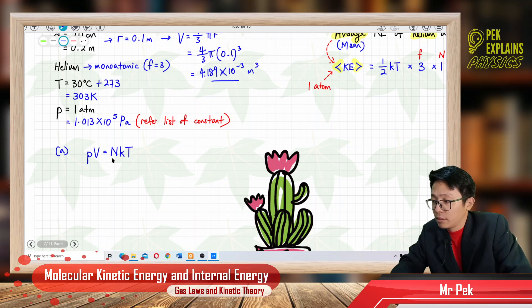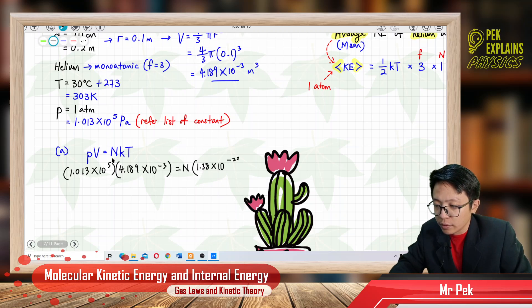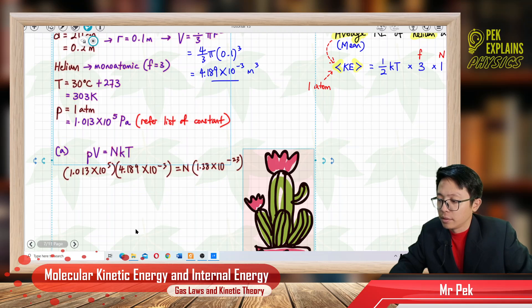Let's substitute all the information. Pressure is 1.013 exponent 5 Pascal, already in Pascal. Volume is 4.189 exponent negative 3 meter cube. And then N and K, K is 1.38 exponent negative 23.